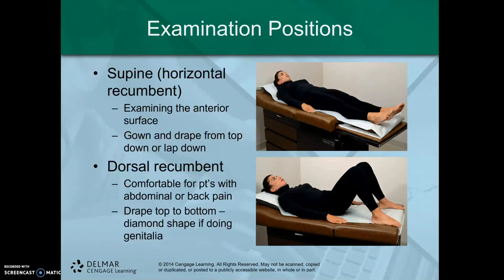Our second position is the bottom right-hand picture, which we refer to as dorsal recumbent. It's essentially the same as supine, however with one minor difference — bringing the knees up with feet flat on the floor. Draping would be the same, shoulders down to feet. For an OBGYN exam in this position, you may drape in a diamond shape with the point in between the knees. The reason for bringing the knees up is it reduces pressure on the lumbar spine, so if somebody has lower back issues, you can have them draw their knees up or place a rolled towel, pillow, or roll underneath the knee to reduce pressure on the low back.